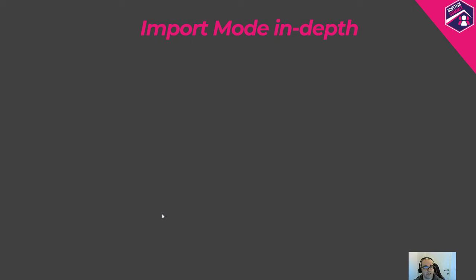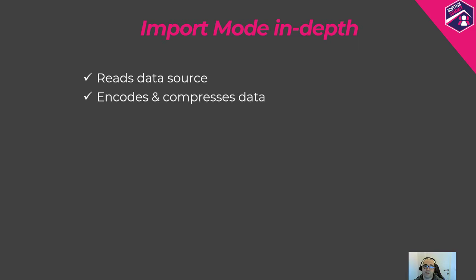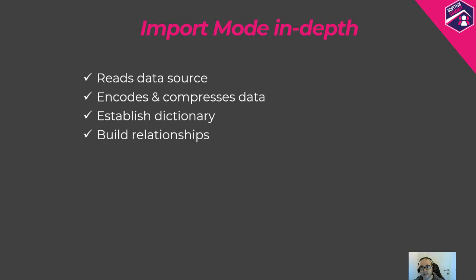Let me explain in more detail what VertiPaq does in the background to boost performance of our Power BI reports. When we choose import mode, VertiPaq performs the following actions: first it reads the data source and transforms data into a columnar structure; then it encodes and compresses data within each column; next it establishes a dictionary and index for each column; after that it prepares and establishes relationships; and finally VertiPaq computes all calculated columns and calculated tables and compresses them.